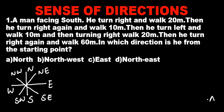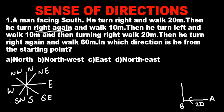Let the starting point be A. He is facing south. He turns right and walks 20 meters from A up to B. Then he turns right again.